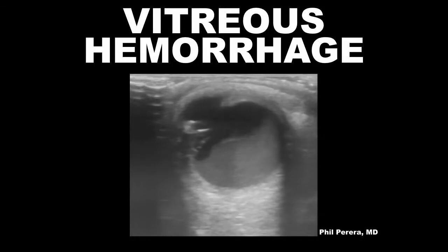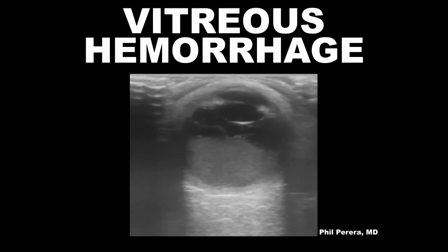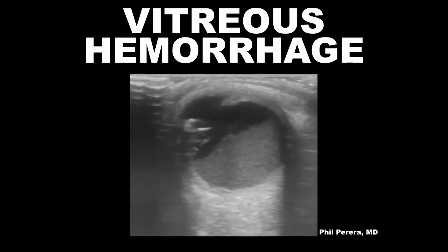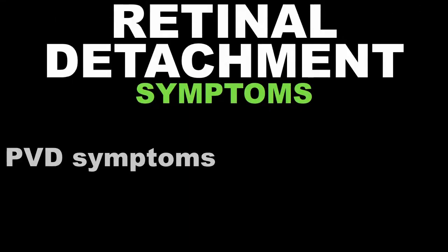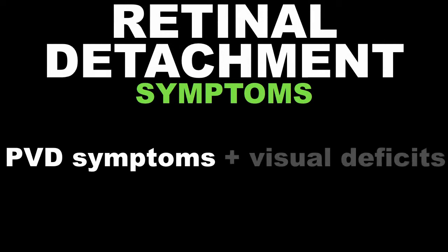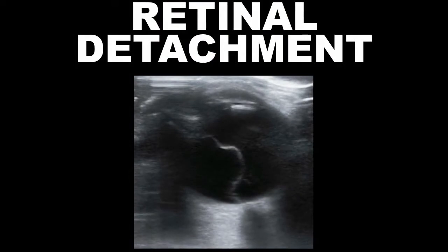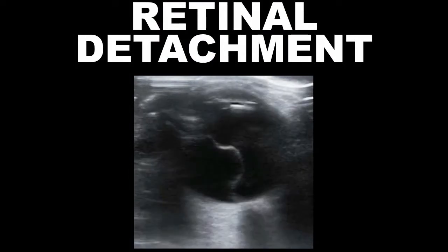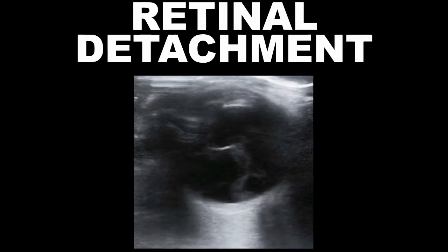You can also see a vitreous hemorrhage — this is really easy to see when you have the patient do something called kinetic echography, which is basically just having them move their eye back and forth. If you see a bunch of hemorrhage in there, it's a vitreous hemorrhage. With retinal detachment, they'll have posterior vitreous detachment symptoms plus visual field deficits. You can try with your ophthalmoscope, but I usually use ultrasound. In a retinal detachment, you see that white line actually attached to and flowering out of the optic nerve — that's what it looks like.